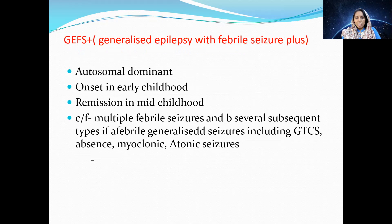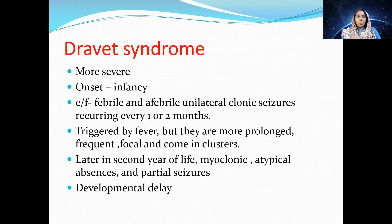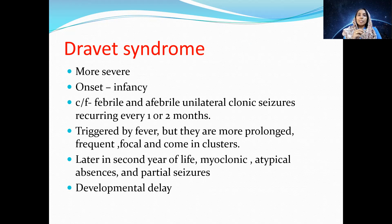Dravet syndrome is the most severe of the epilepsy syndromes. Onset is in infancy with febrile and afebrile unilateral clonic seizures recurring every one to two months — note it is unilateral and clonic, triggered by fever, but more prolonged, frequent, focal, and in clusters. In the second year, seizures evolve into myoclonic or atypical absence and partial seizures, associated with developmental delay.